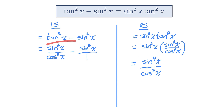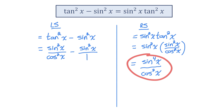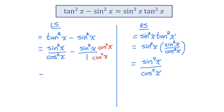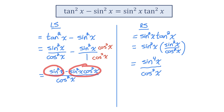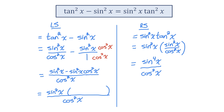On the left side I have two terms being subtracted. I want to combine those into a single term to match the right side, so I need a common denominator. I'll multiply sine squared over 1 by cos squared top and bottom. Now that they have a common denominator of cosine squared, I can write them as a single fraction. The two terms in the numerator both have a factor of sine squared x, so I'll common factor that out. When I divide both terms by the sine squared x I factored out, I get 1 minus cosine squared x. Based on the Pythagorean identity, 1 minus cosine squared x equals sine squared x.